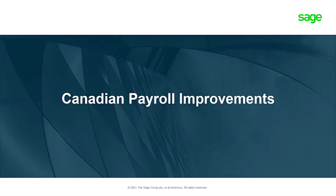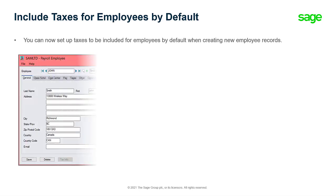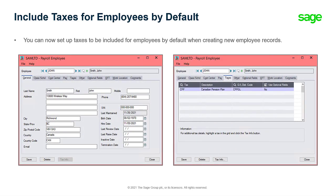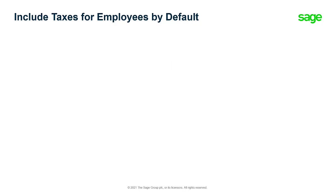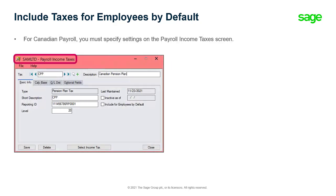Let's have a look at the improvements for Canadian payroll. You can now set up taxes to be included for employees by default when you create new employee records. To do this for Canadian payroll, you must specify settings on the Payroll Income Taxes screen. On the Basic Info tab, select the Include for Employees by Default option.